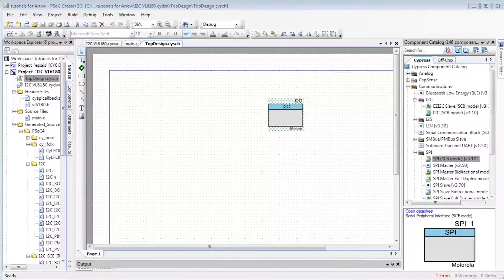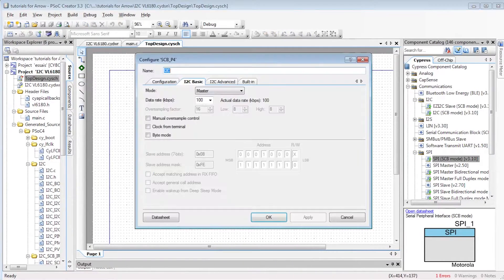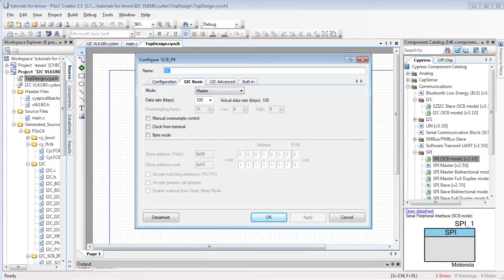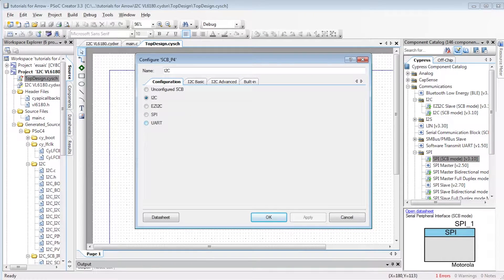For the I2C, the schematic is very simple. Let's drag an I2C SCB mode that we configure as I2C master mode at 100 kHz. Fast mode, slow rest, and let's name the component I2C.